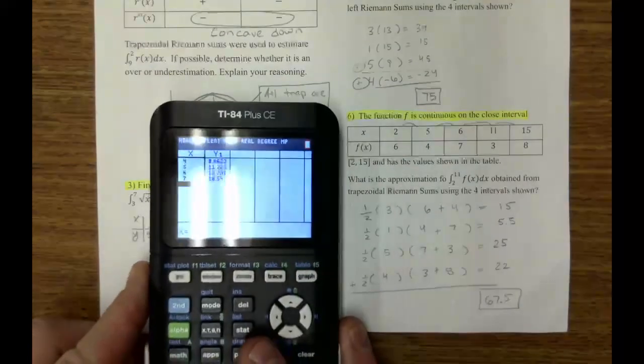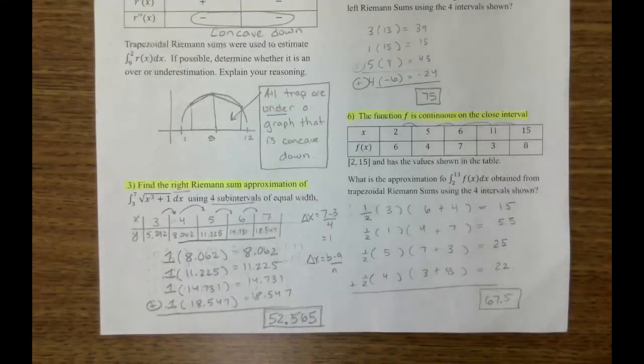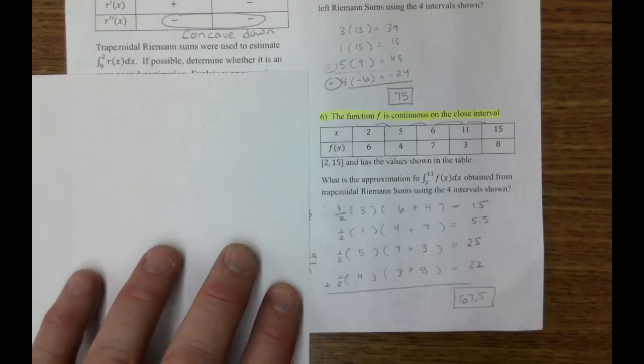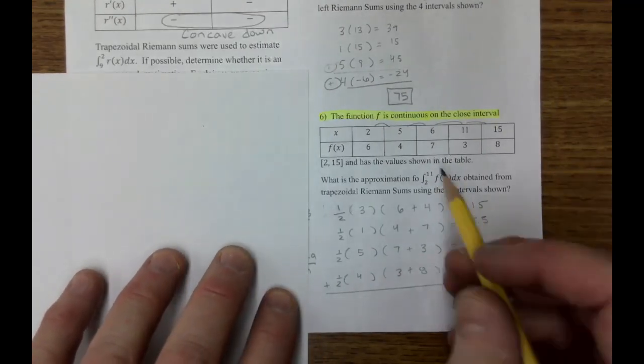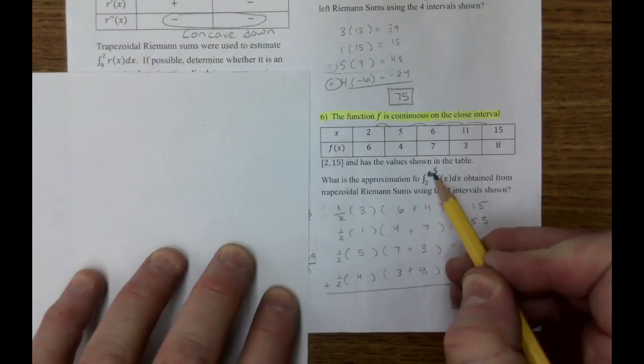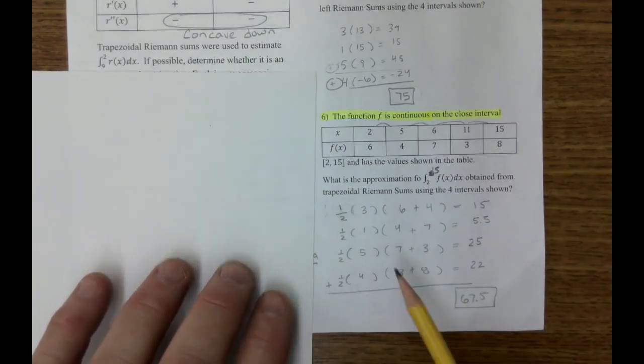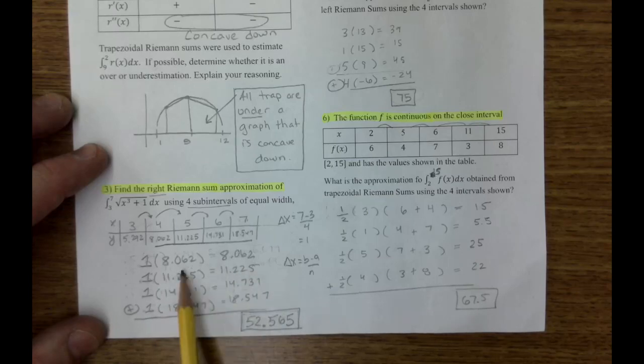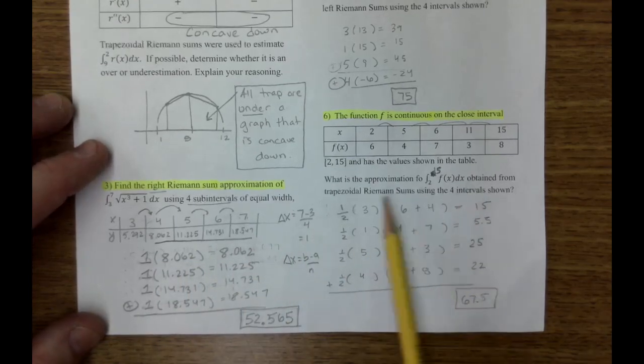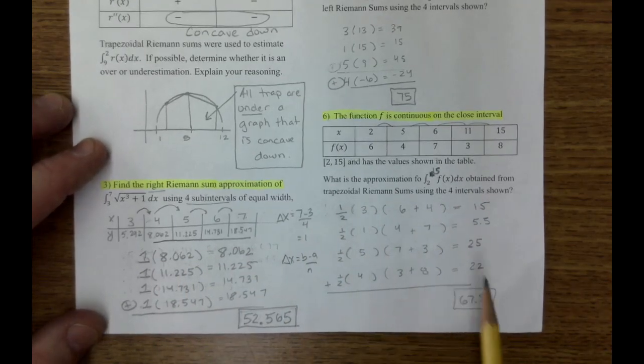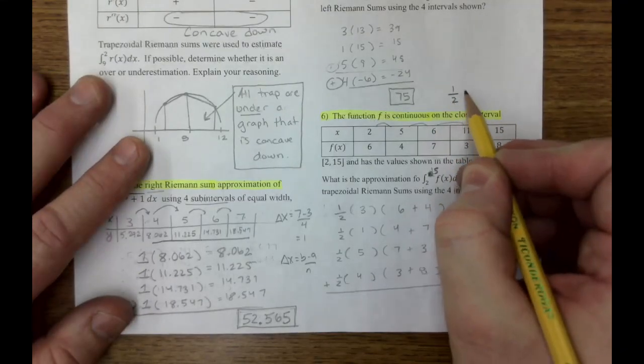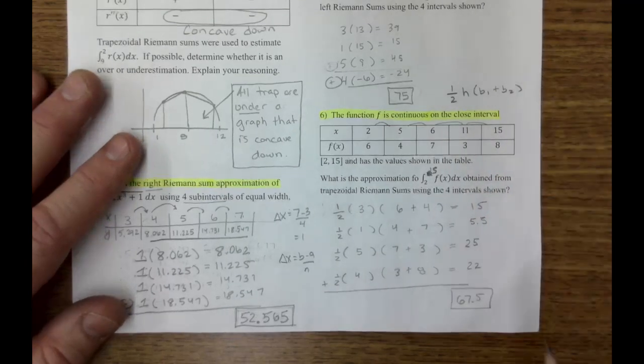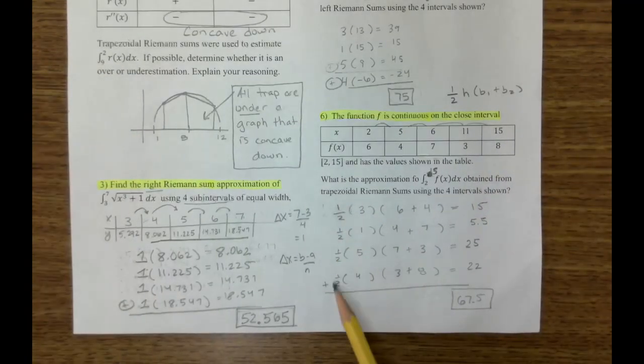All right, the other thing you need to know how to do is same thing, but on number six, what we're going to do here on number six is we're going to find the area from 2 to 15 using trapezoids. So there's my four, just like this, when I have one, two, three, four lines, these are rectangles, now I have four trapezoids.